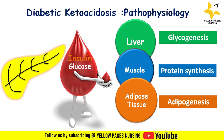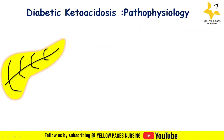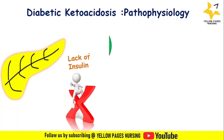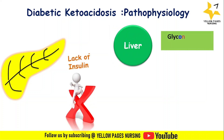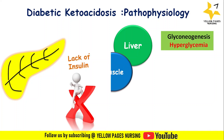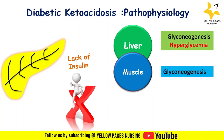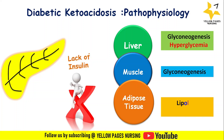Remember that this is the normal function of insulin. But what happens in diabetic ketoacidosis is there is a lack of insulin, which enhances gluconeogenesis — that is, formation of glucose from non-carbohydrate sources — which in turn leads to hyperglycemia. In muscles, it also enhances gluconeogenesis, and in adipose tissue, it enhances lipolysis, which is the breakdown of fat cells, and also leads to formation of ketone bodies.